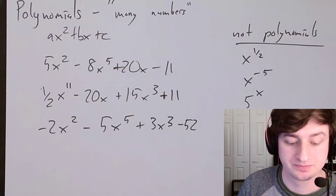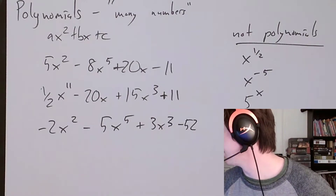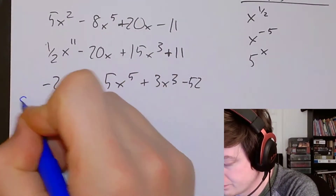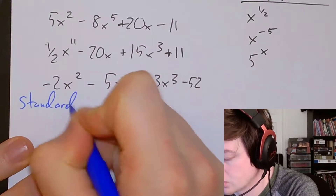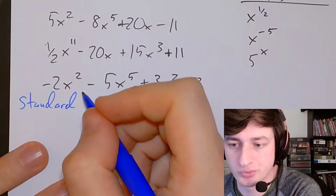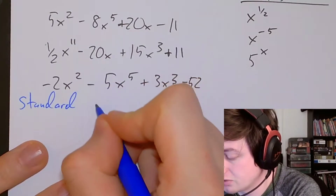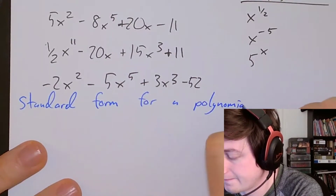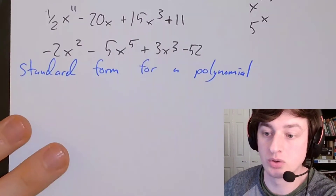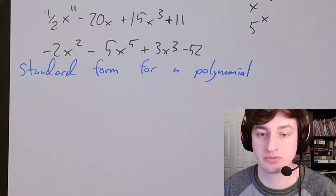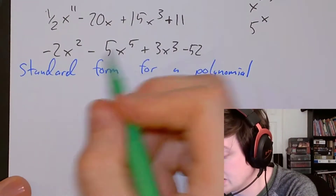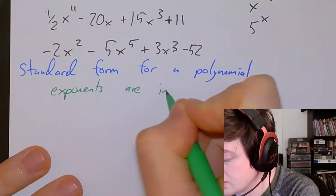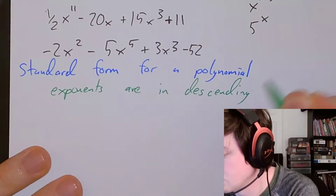So those are polynomials. The thing we're going to do with these today is write them in standard form. We're going to use standard form to do one thing, which will probably continue on Thursday. Standard form for a polynomial is what you are very used to, especially when it comes to quadratics — it's just writing it where the exponents are in descending order.